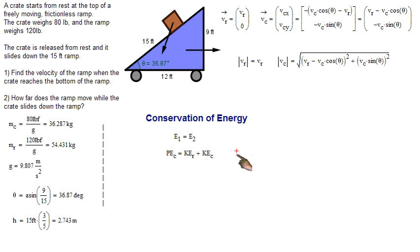So PEC equals KER plus KEC. There's no potential energy at the end because the crate has reached the bottom of the ramp. So when we plug in all our variables for this, the potential energy is MC times G times H, and all the kinetic energy stuff gets plugged in. Remember I said earlier that energy is a scalar quantity. It is non-directional, so we have to get the magnitude of the velocity components in here. So we have the magnitude of VR squared times one half MR, and then one half MC, and then the magnitude of VC squared.